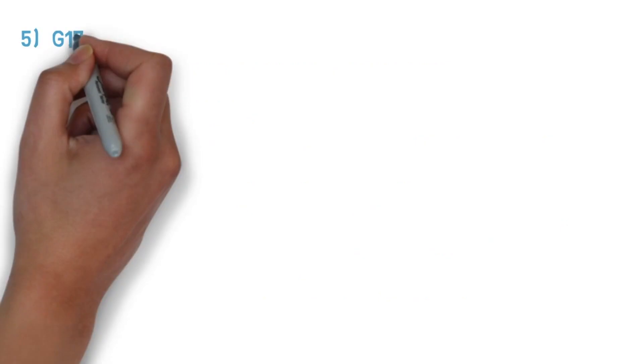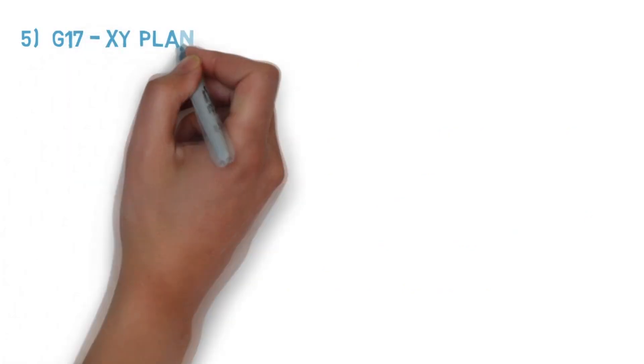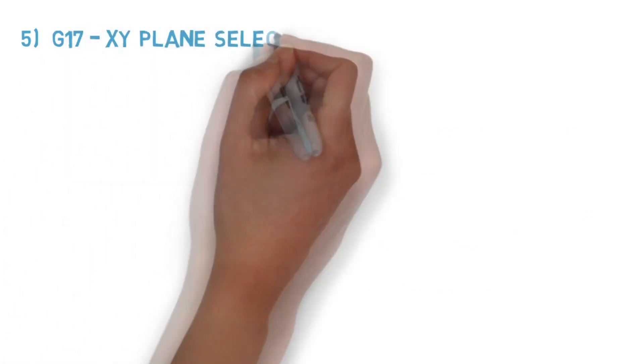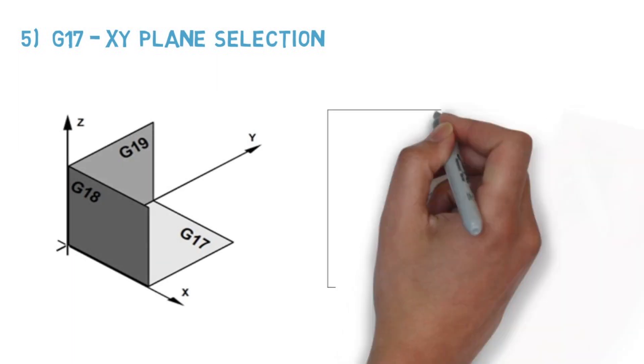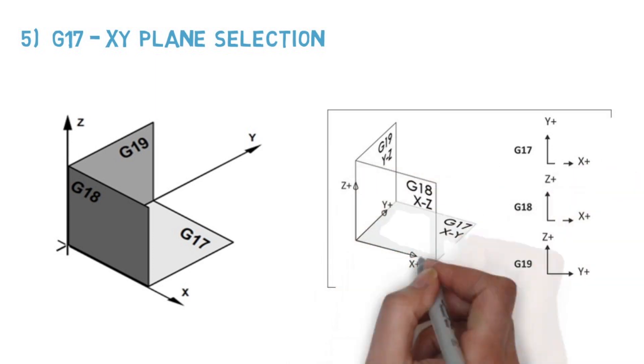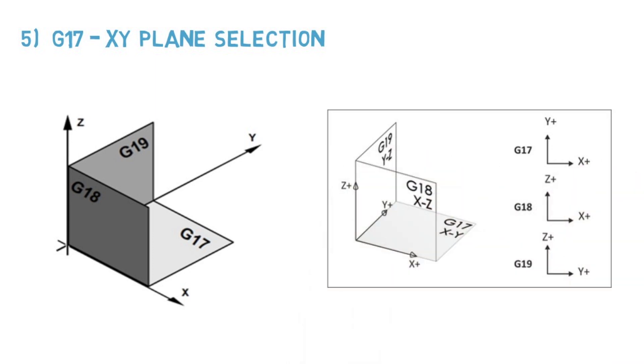Number five, G17 - XY plane selection. G17 is used for selecting the XY plane for machining. In VMC, we have three axes and these three axes give three planes possible for machining. Most of the time, we use the XY plane for machining. But very rarely, for getting circular interpolation in vertical direction, we may use G18 or G19 for other planes.